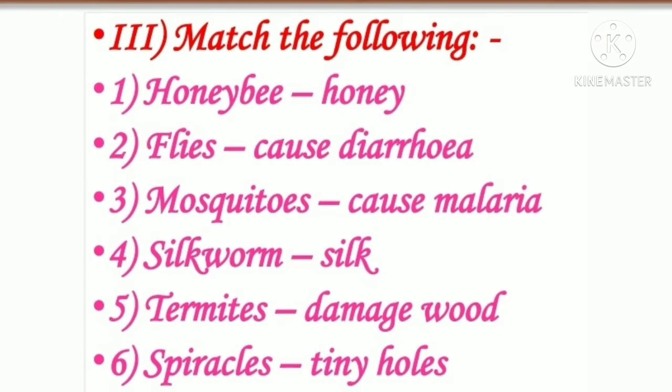Third question: match the following. First one: honey bee — honey. Second one: flies — causes diarrhea. Third one: mosquito — causes malaria. Fourth one: silk worm — silk. Fifth one: termites — damage wood. Sixth one: spiracles — tiny holes.